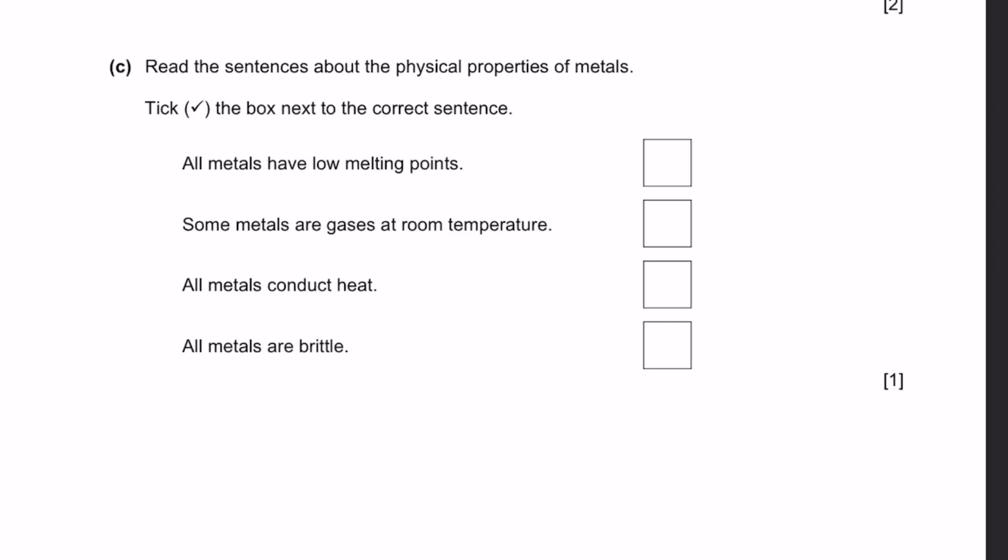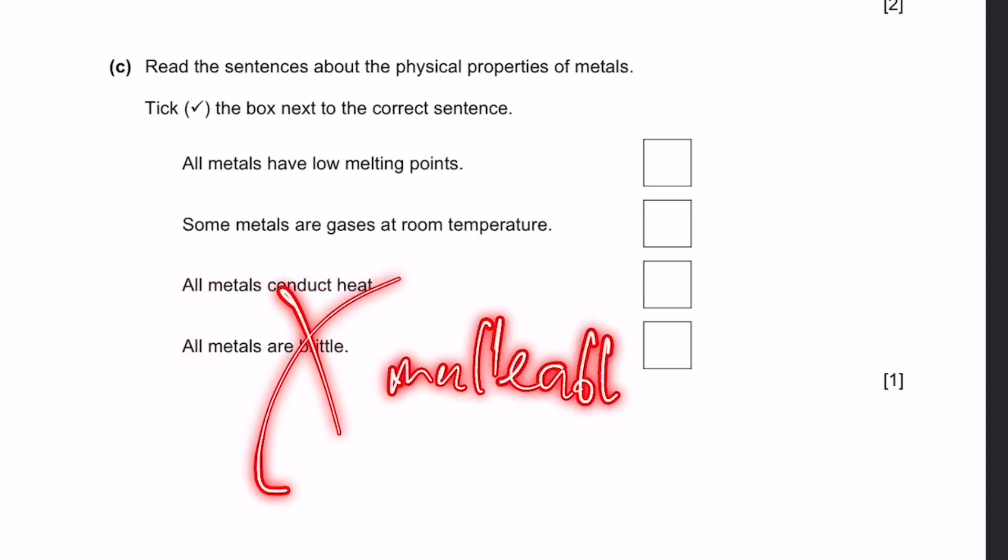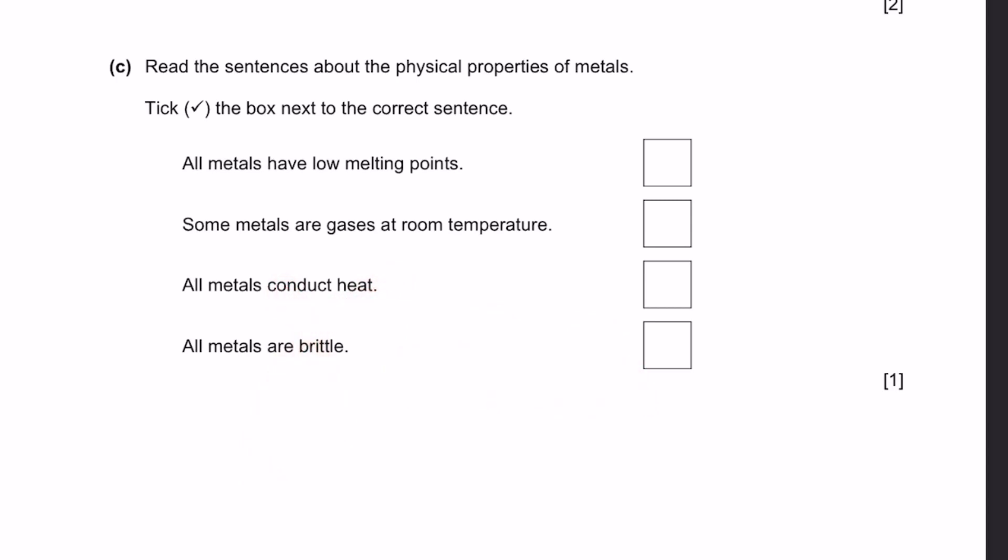All metals conduct heat. This is true. Why? They are metals and they can conduct heat because they are in a solid form and their particles can vibrate easily for conduction of heat. All metals are brittle? No, they're the opposite. It's malleable. That's the opposite of brittle. That means it can be molded into a shape, but it does not break easily. So the third option is correct.